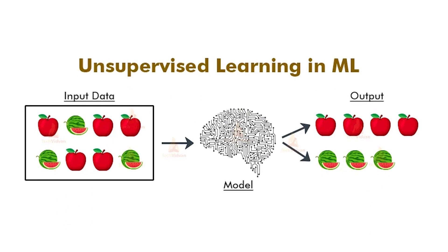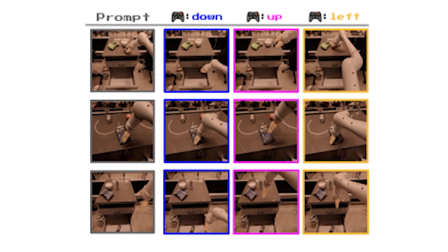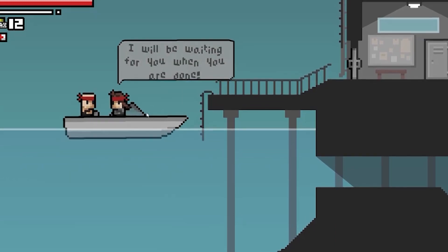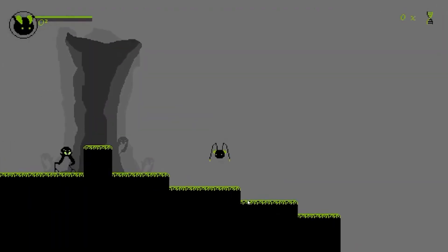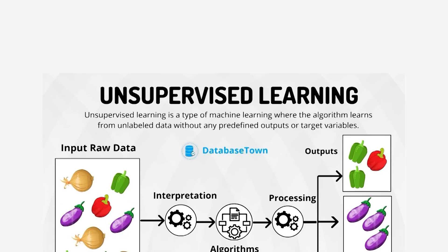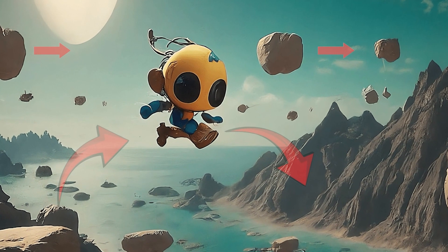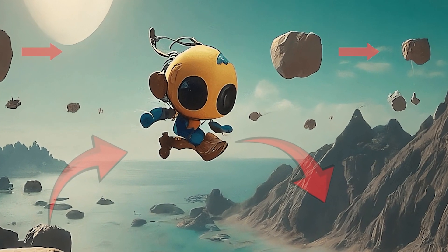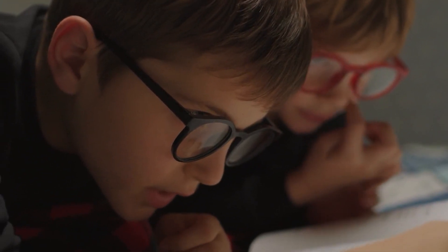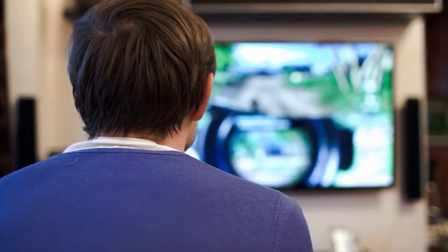What truly distinguishes Genie is its utilization of unsupervised learning. Unlike conventional AI which relies on meticulously labeled data, Genie autonomously identifies patterns and relationships. Genie's training journey begins with a vast repository of over 200,000 hours of video footage from 2D platformer games scattered across the internet. Rather than following traditional supervised training, it ventures into unsupervised learning — roaming freely, identifying patterns and relationships without the crutch of labeled data, absorbing every detail of gaming from character movements to the intricacies of controls and action sequences.